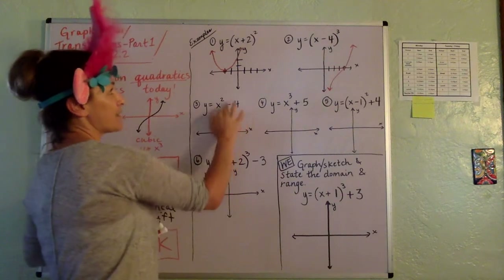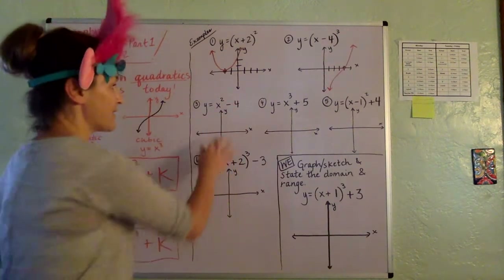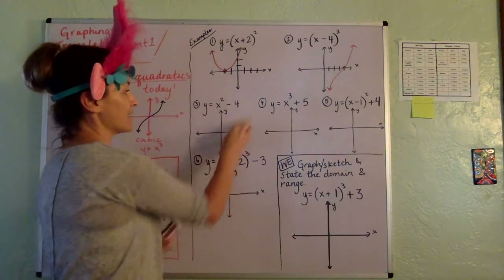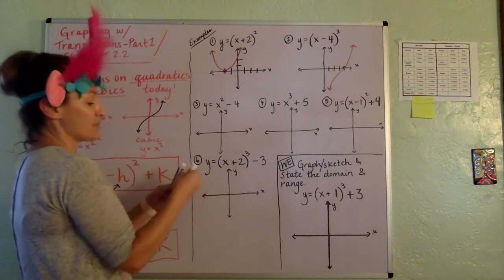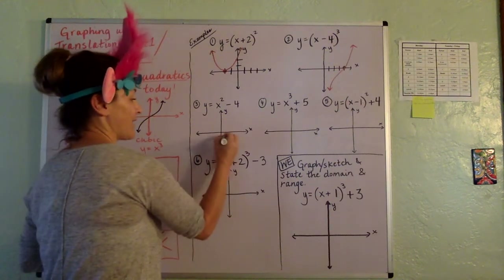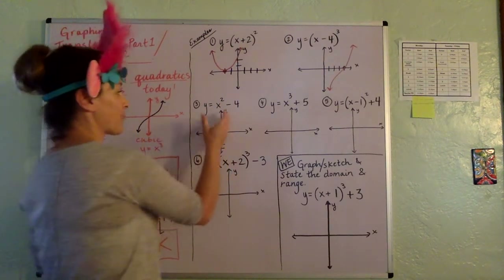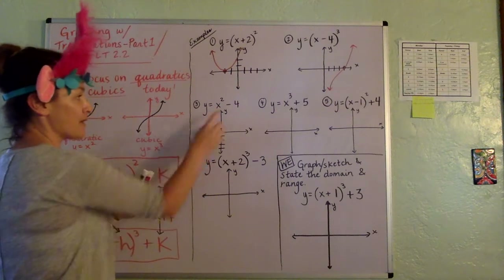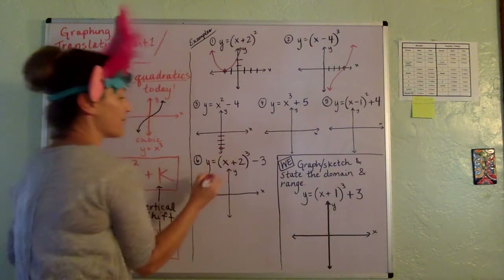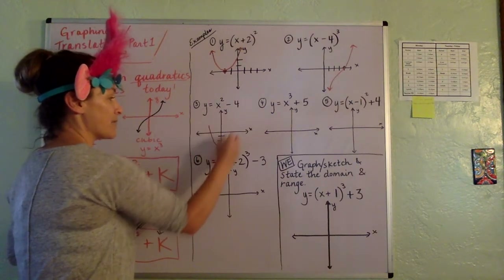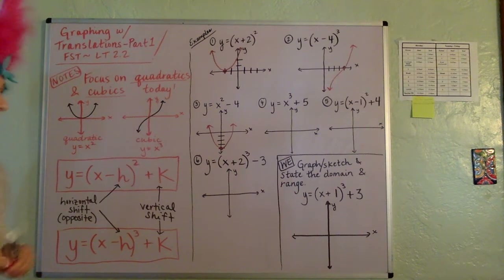Notice how this minus 4 is not inside the parentheses with the x — it's tacked on the end. When it's tacked on the end, that's a vertical shift, and it goes the way that it says. So we're back to x squared, which means it's a parabola, and we're going to shift it down to negative 4. A quick sketch looks something like this.